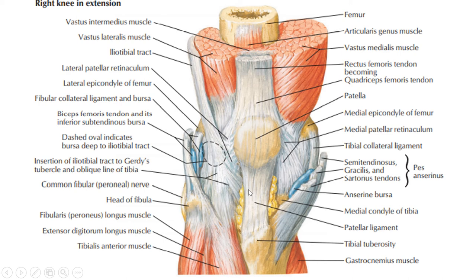The capsule of the knee joint is deficient anteriorly and is fulfilled by the quadriceps tendon, patella, and ligamentum patellae. The vastus lateralis and vastus medialis tendons attach to the lateral and medial aspects of the patella bone respectively, forming the lateral patellar retinaculum and medial patellar retinaculum. The capsule attaches to these structures.